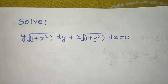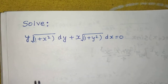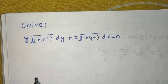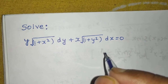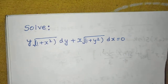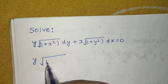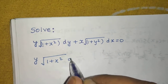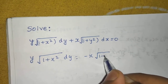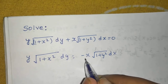This question is from differential equations. When seeing the question, the first thing is always to go for variable separable if possible. For that, let's move terms to the RHS: y times √(1+x²) dy equals minus x times √(1+y²) dx.